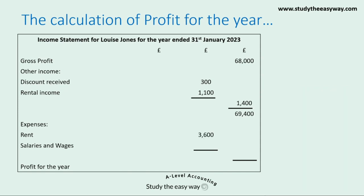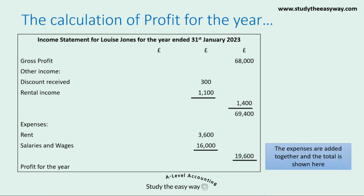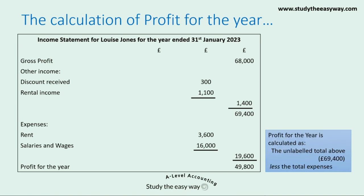Next we list out in the middle column all of our expenses — here I've used rent and salaries and wages. There are lots of other examples of expenses that might be included depending on the question, such as electricity, water, insurance, advertising, office expenses and so on. Once all of the expenses have been shown in the middle column they are added together and the total is shown in the right hand column. The income statement is then finished by calculating profit for the year. This is calculated as the unlabelled total — the £69,400 — minus the total expenses. And that completes the income statement.